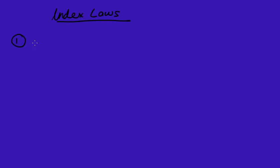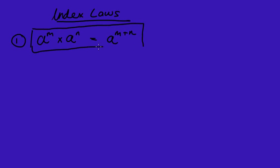The first is a to the power of m times a to the power of n, which is equal to a to the power of m plus n. I like to look at the general form of the rules first and then look at an example — a cubed times a squared.